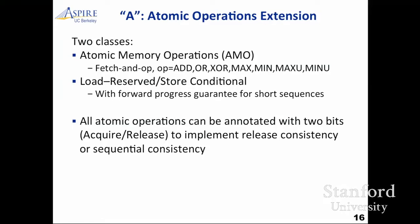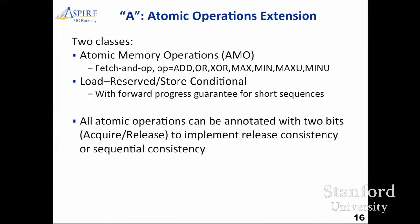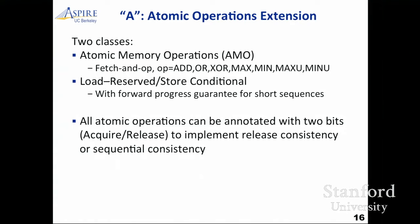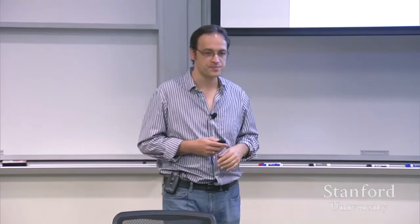The atomic operations are one of the standard extensions. This has two categories: AMOs — fetch-and-op, add, or, max, min kind of things on a single word in memory — and load-reserve/store-conditional style. We've added a forward progress guarantee for short sequences. One new thing is all the atomics are annotated with two bits: acquire and release to support release consistency models, which is what's in the modern language standards. If you set both bits, it becomes strongly ordered. The memory model is relaxed and fixed — there's a fence instruction in the base, plus AMOs can have acquire/release orderings. Transactional memory remains reserved as an extension.